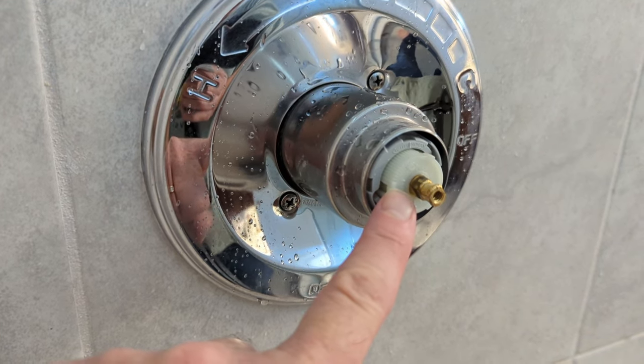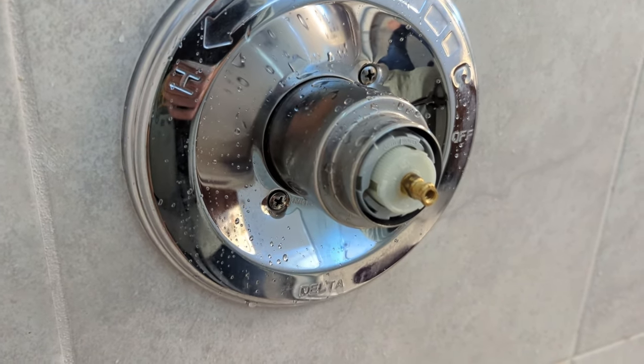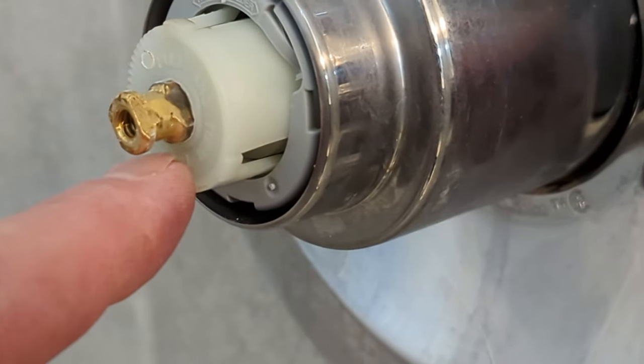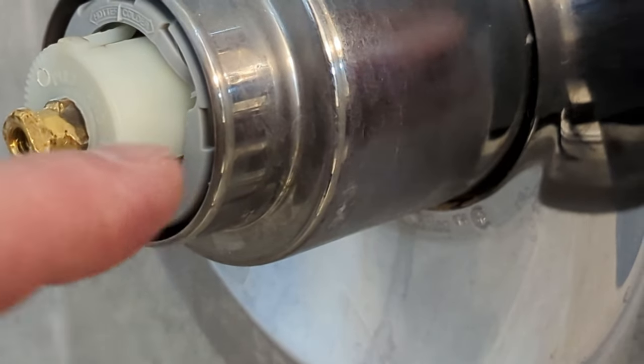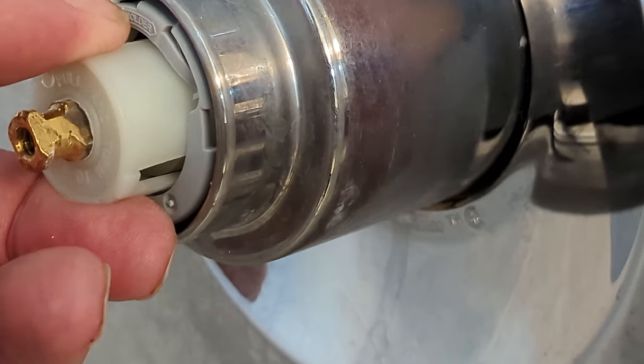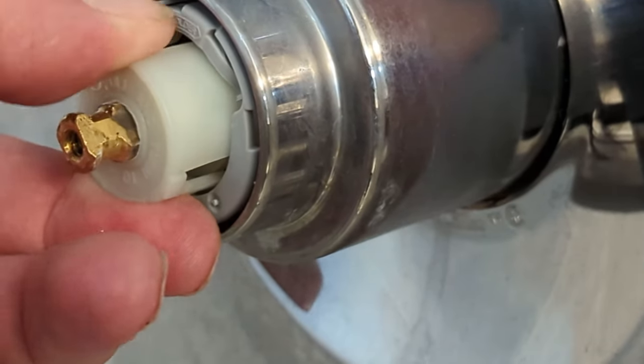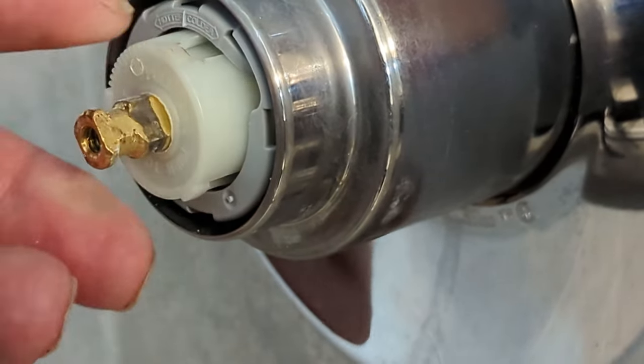Now remember, these are just plastic pieces in here, so don't go crazy on it. Now what we don't want is it being poked out like this. This white piece needs to be recessed back in there, so you might just need to wiggle this a little bit until it actually goes in right there.